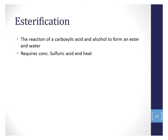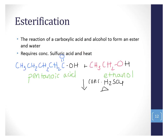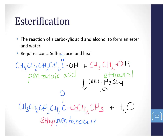Esterification is how we make an ester — it's the reaction of a carboxylic acid and an alcohol to form an ester and water. Our catalyst is concentrated sulfuric acid, and we also need heat. Here's an example with pentanoic acid and ethanol. We produce our ester by losing a molecule of water: the hydroxyl group from the pentanoic acid and the hydrogen from the alcohol. We keep the 5-carbon chain with the C double bond O to give us the pentanoate, and we keep the 2-carbon chain attached to the oxygen to get the ethyl of ethylpentanoate.